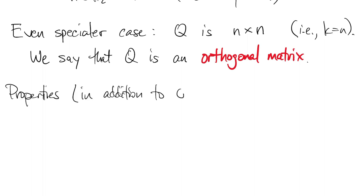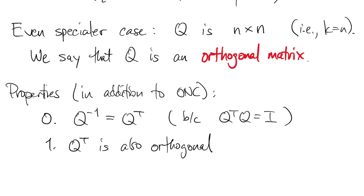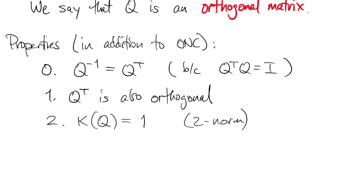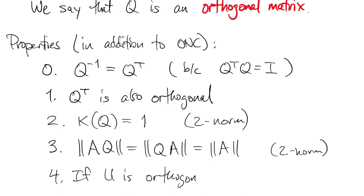An orthogonal matrix is ONC, but it has some additional properties. First of all, the inverse of Q is the transpose. That's because of the ONC property and because it's square. It's easy to show that Q transpose must also be orthogonal, that the condition number of Q is equal to 1 if you're in the 2 norm, and that the norm of any matrix times Q is the same as the norm of that matrix. Finally, if you have another orthogonal matrix U, then the product of the two matrices is orthogonal as well.